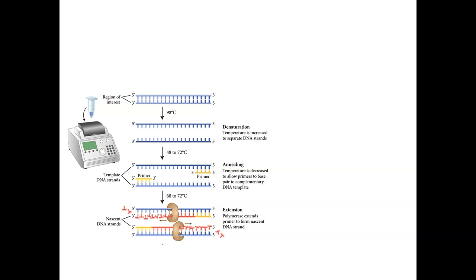Now we cool that sample down, and by bringing the temperature down, this provides an opportunity for the primers to come in and base pair to our target sequence. The primers also use the rules of base pairing — if there's an adenine, there's a thymine in the primer; if there's a guanine, there's a cytosine in the primer. These primers come down and bind to the target sequence, and now that the strands are primed, DNA polymerase can come and extend new DNA off of them.